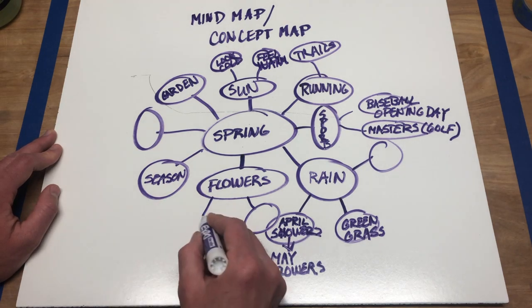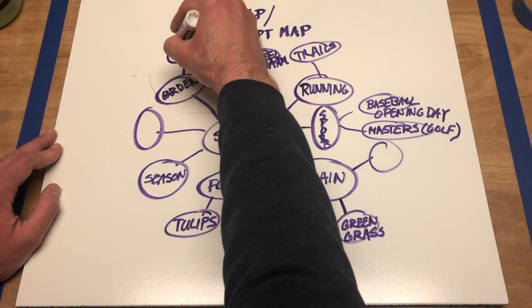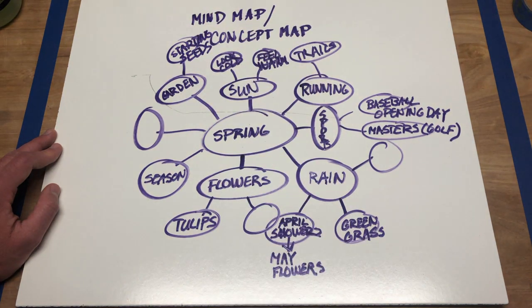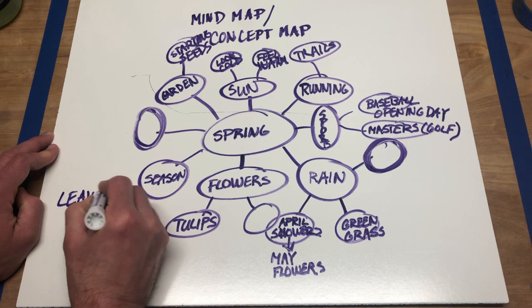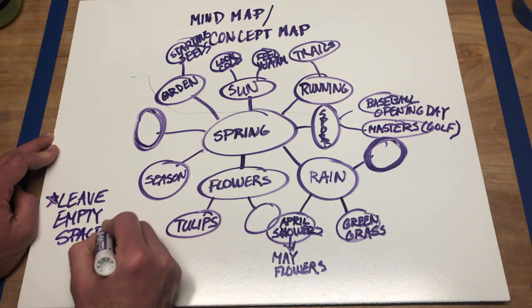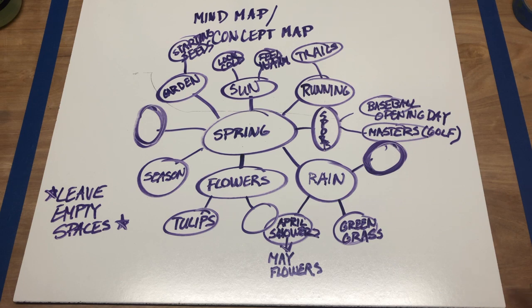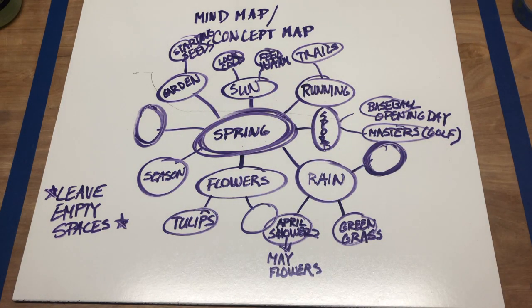Now I might start thinking of other specific things. For flowers, I think of tulips, because they come up even in the snow sometimes. For gardens, I think about starting seeds. I always tend to leave empty spaces too, because ideas can come back to me at other times. So this is an example of the start of a mind map. The idea is simple — I have a central idea, and then I go down into other little chunks of that, getting more and more specific depending on what I'm looking for.